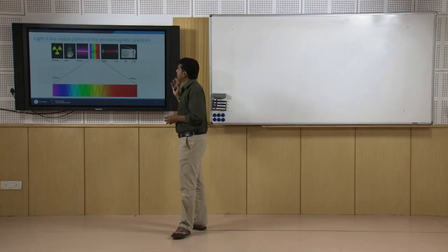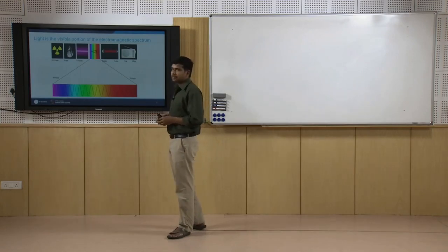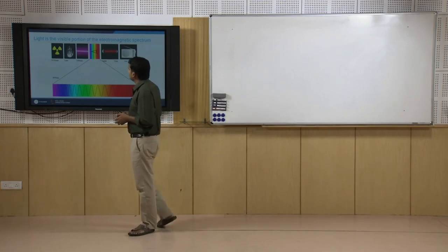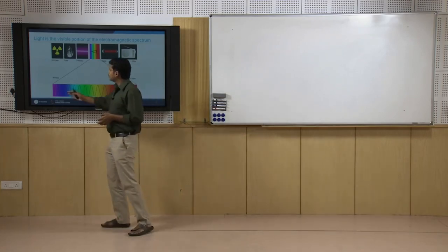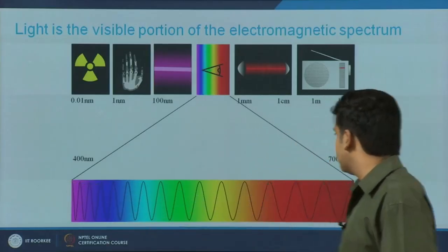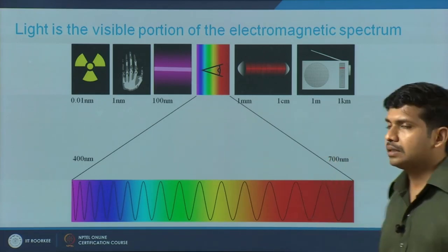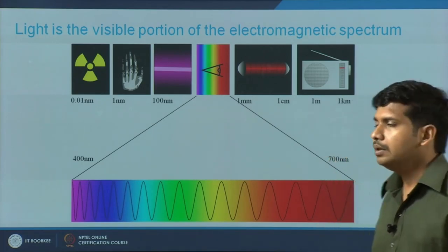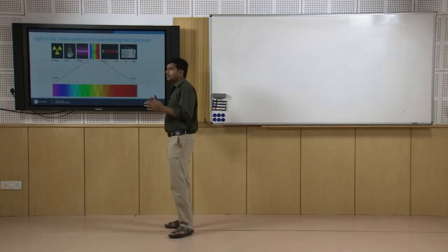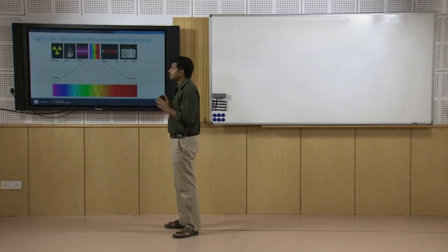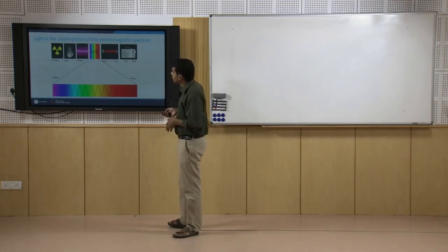Light is a part of the electromagnetic spectrum — it is the visible portion. This is the only thing human eyes can see. It ranges from around 400 nanometers to 700 nanometers. Below that you have infrared, and on the other side you have ultraviolet. We are interested in the lighting that is the visible part of the electromagnetic spectrum as far as this module is concerned.